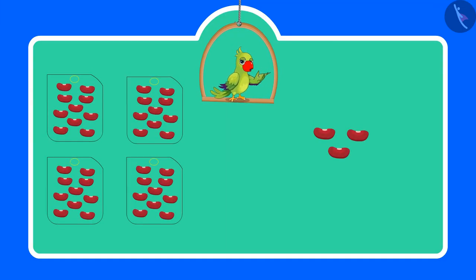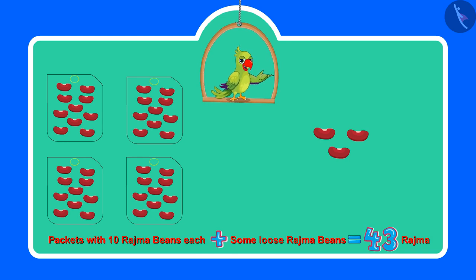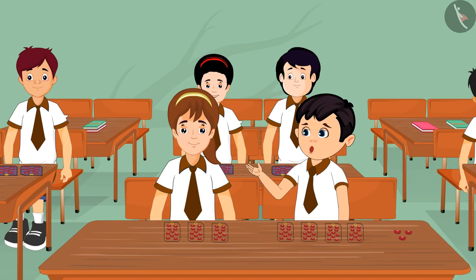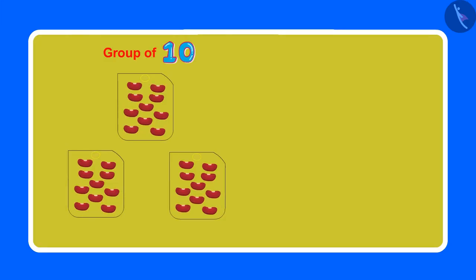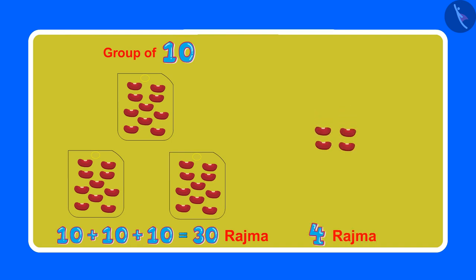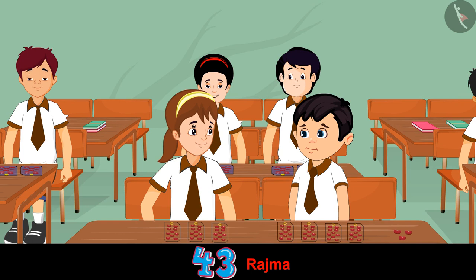Today the teacher asked all the children to get rajma beans and some small packets from home. They have to show 43 rajma beans with the help of sets of 10 rajma beans and some loose rajma beans. Aarti says: We will have a lot of fun today. See, I have 4 packets with the rajma beans. How many packets have you made? Chotu replies: I have made 3 packets, with 10 rajma beans each. Now I want 4 rajma beans more, then the total will be 43 rajma beans. Right, Chotu?